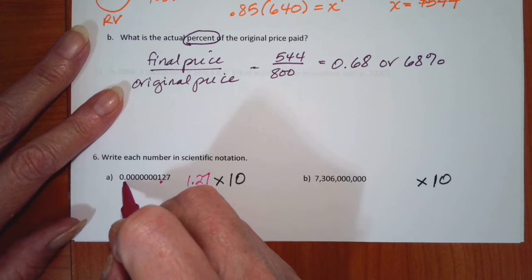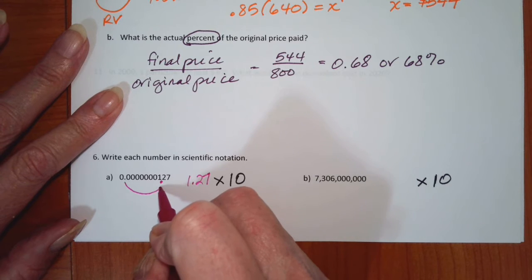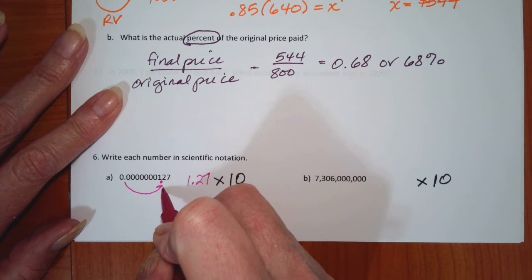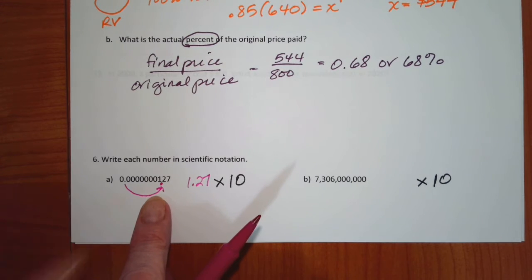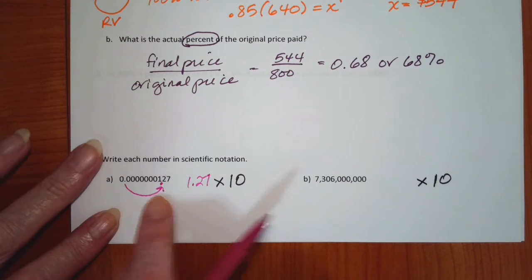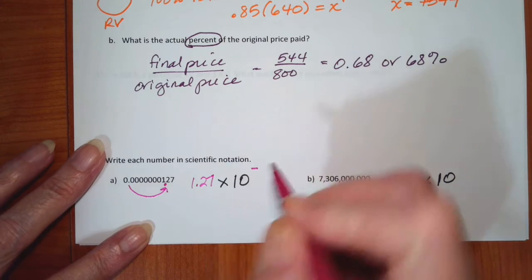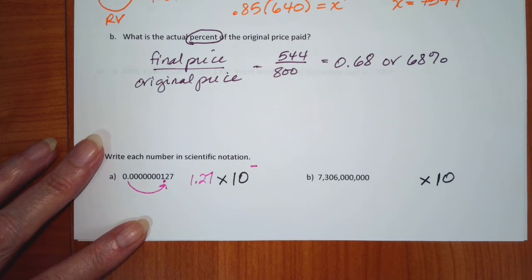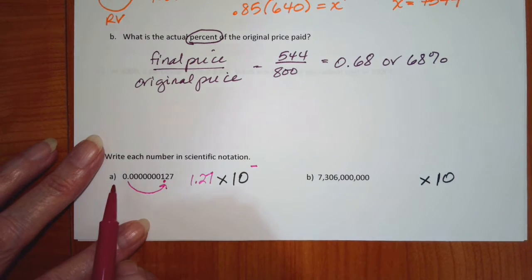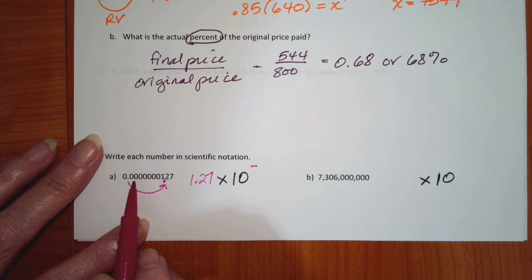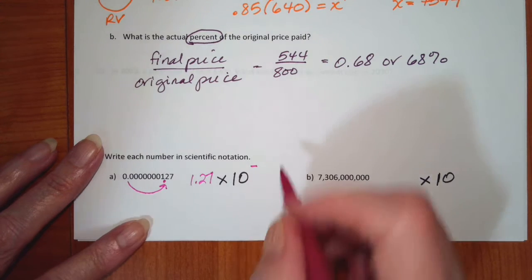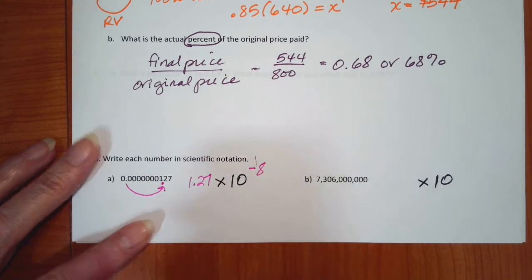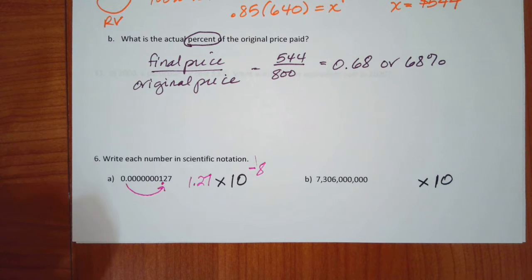My decimal is here so I'm going to move it over. This is a small number — a tiny tiny number — which means I'm going to have a negative exponent. I just count how many places I move it: 1, 2, 3, 4, 5, 6, 7, 8. So it ends up as 1.27 times 10 to the negative 8.